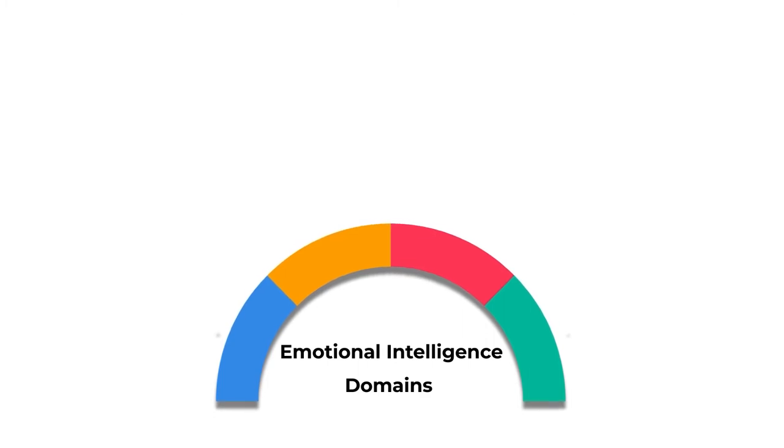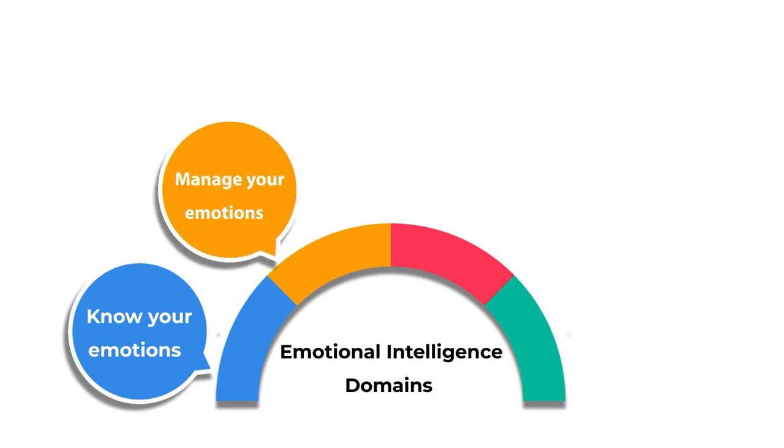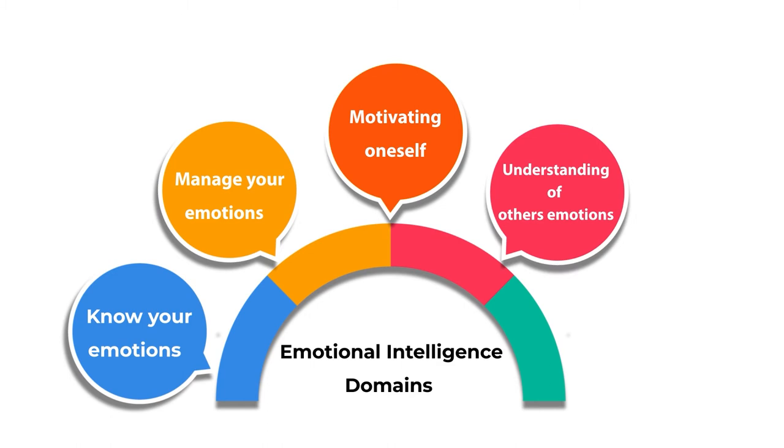Goleman defined emotional intelligence as the ability to understand one's own feelings, show empathy for others, and regulate emotions for a quality life. The book claimed emotional intelligence as a stronger predictor of success than IQ, and also stated that EQ can be improved. Five domains of EQ were identified: knowledge about emotions, management of one's own emotions, motivating oneself, understanding others' emotions, and managing others' emotions.